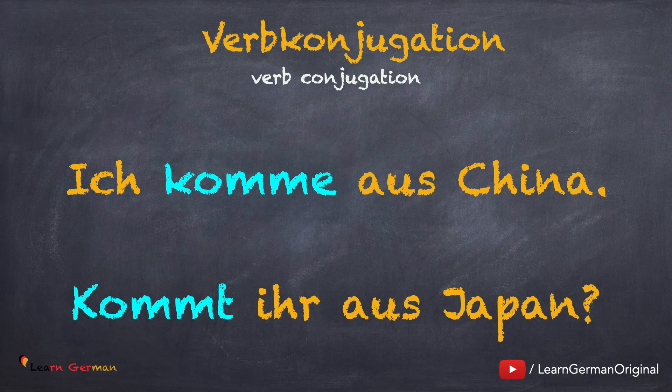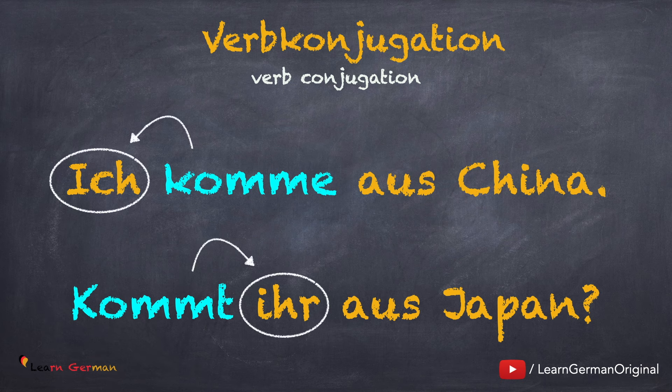The conjugation of the verb depends on the subject in the sentence. In the first sentence it is 'ich' and in the second one it is 'ihr'. We covered these pronouns in one of the previous lessons. So the verb you use must be conjugated according to the subject in a sentence.